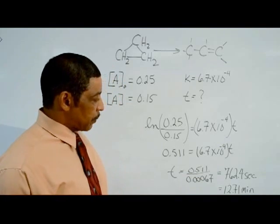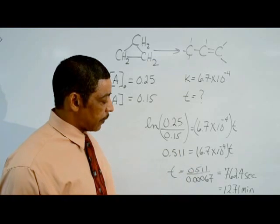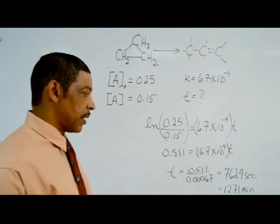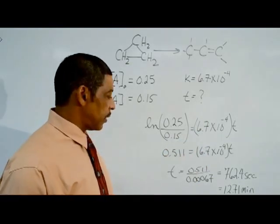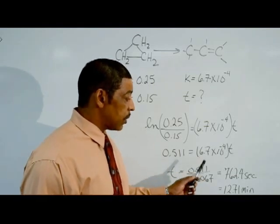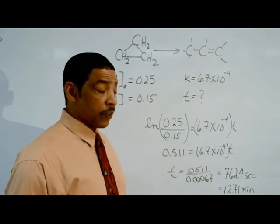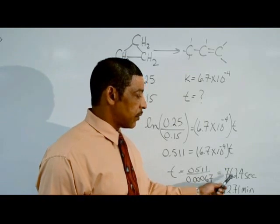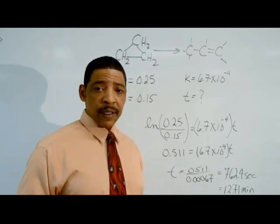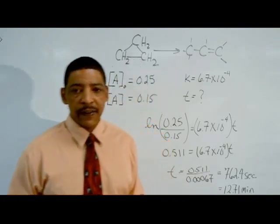Solving for T, we divide through by K. T is equal to 0.511 divided by 0.00067, which represents 6.7 × 10⁻⁴. This equals 762.4 seconds. And 762.4 seconds may be converted to minutes by dividing by 60, which represents 12.71 minutes.